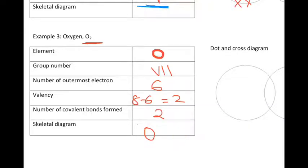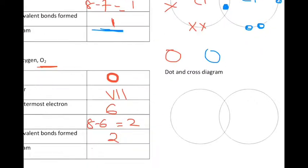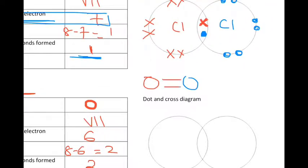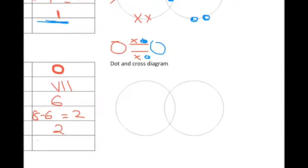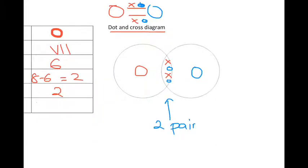Let me draw it here. Red oxygen, blue oxygen — each one is forming 2 bonds, so there's a double bond between them. Each bond represents a pair of electrons, so X is from oxygen red and dot is from oxygen blue. When drawing the dot and cross diagram, oxygen red contributes 2 electrons and oxygen blue contributes 2 electrons. Here you can see 2 pairs of electrons shared.